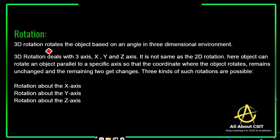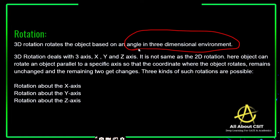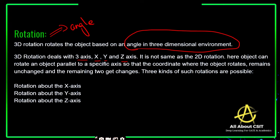Now coming to rotation. The 3D rotation rotates objects based on an angle in a three-dimensional environment. The rotation is mainly focused on the angle — the object is going to rotate based on the angle, about the x axis, y axis, and z axis. A 3D rotation deals with three axes: x, y, and z, and it is not the same as 2D rotation. In 3D, objects can rotate parallel to a specific axis.